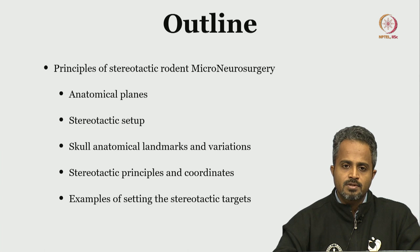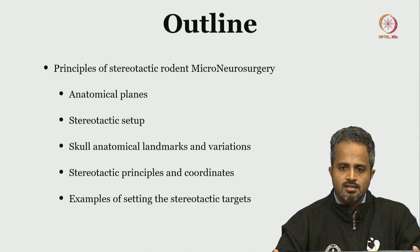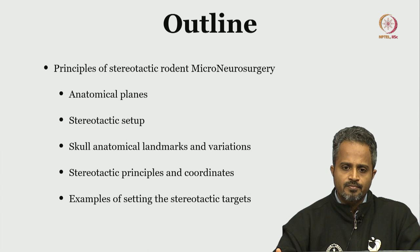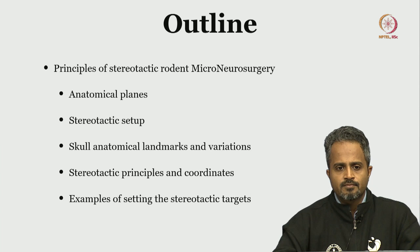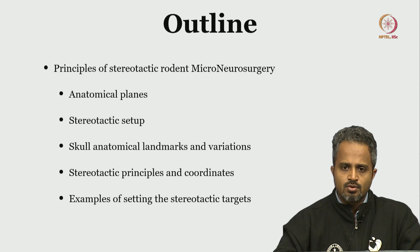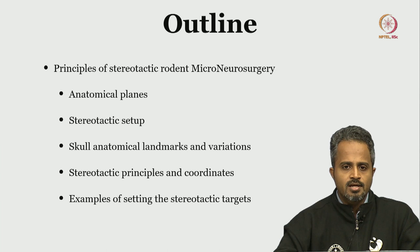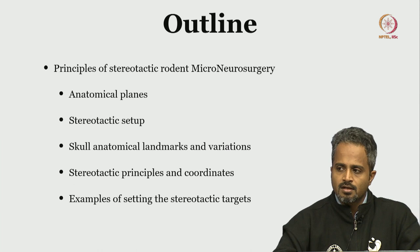We are covering anatomical planes first, then we will go ahead with an introduction to the stereotactic setup. It is very important to understand this equipment — it is a very versatile tool used for most neural surgeries. We will also cover how to use the setup, how to troubleshoot if something goes wrong, the various skull anatomical landmarks and variations, and the stereotactic principles and coordinates. Understanding the principles is vital because even if you have sources like Jove or various atlases, if something goes wrong you need to know how to troubleshoot and modify the protocol for your experiments.